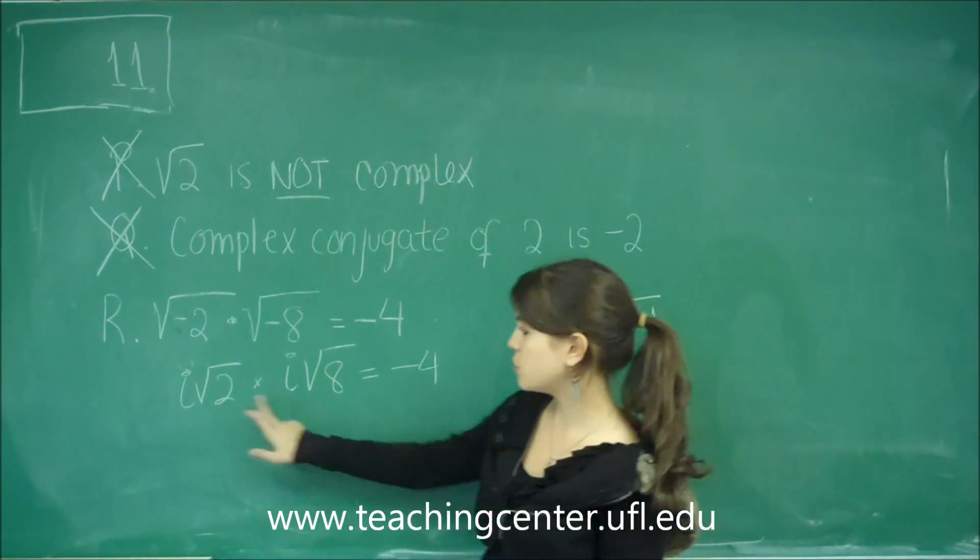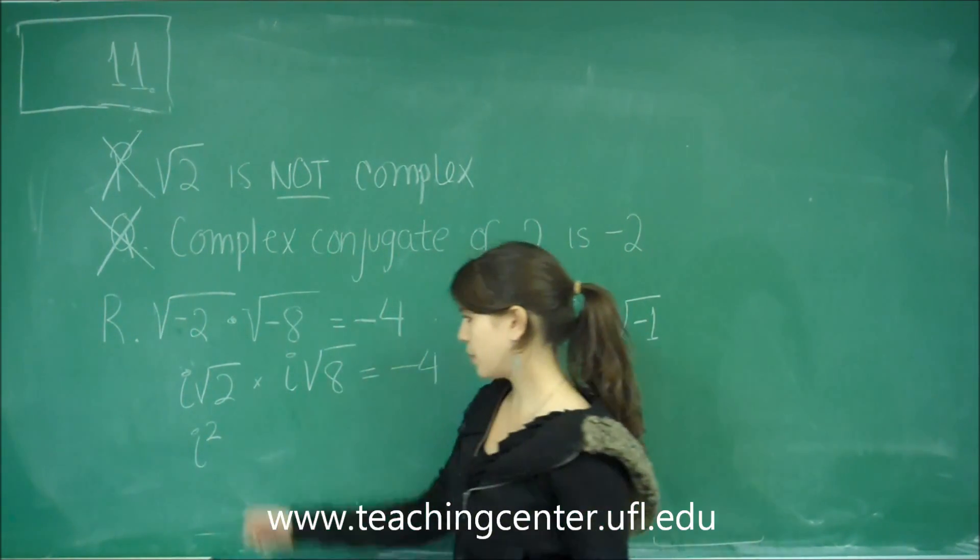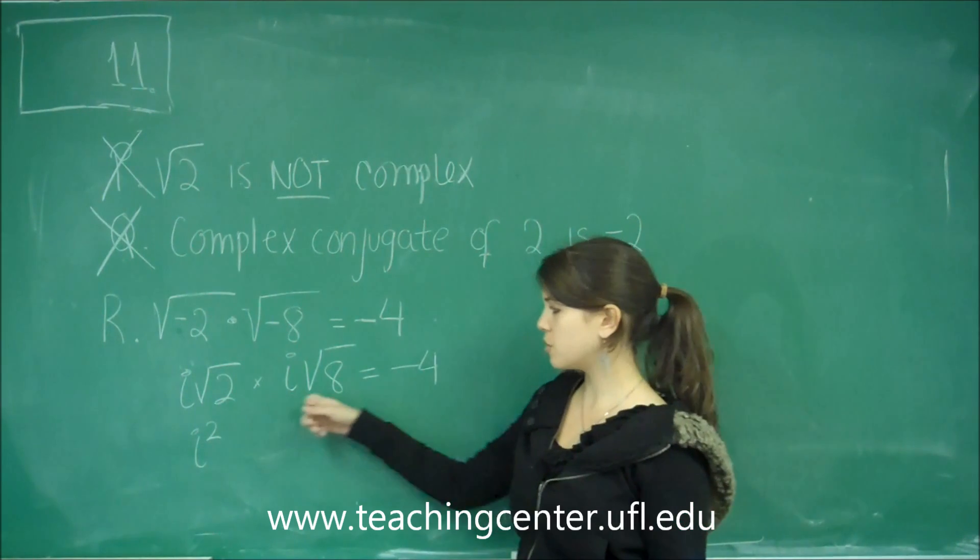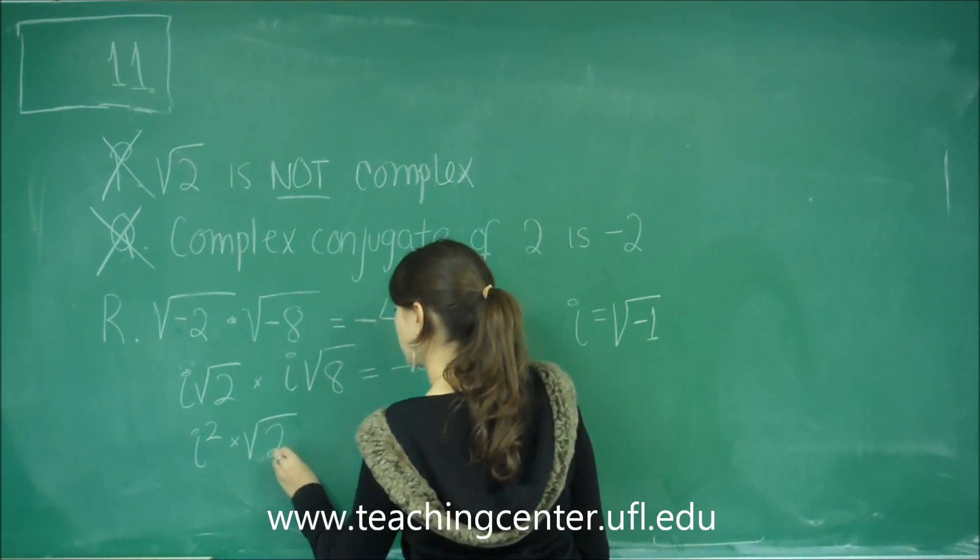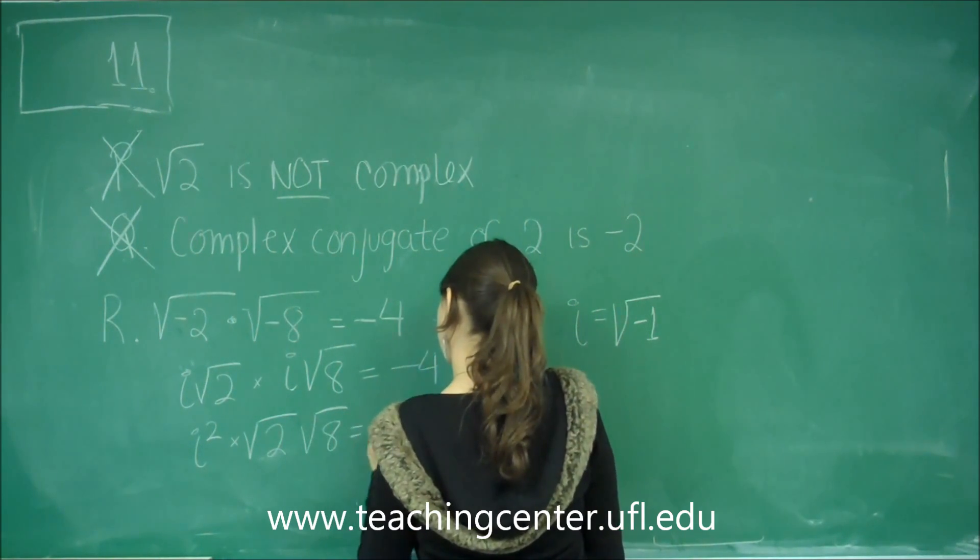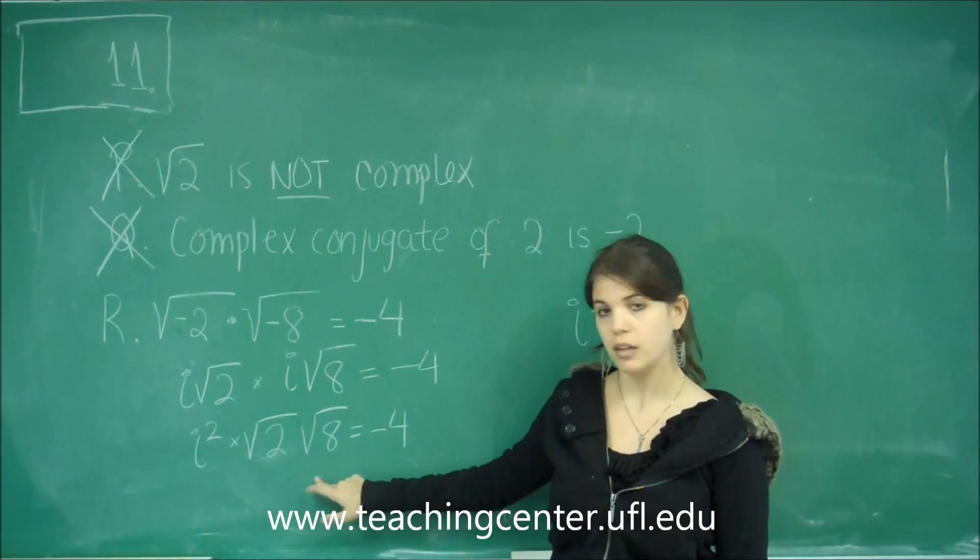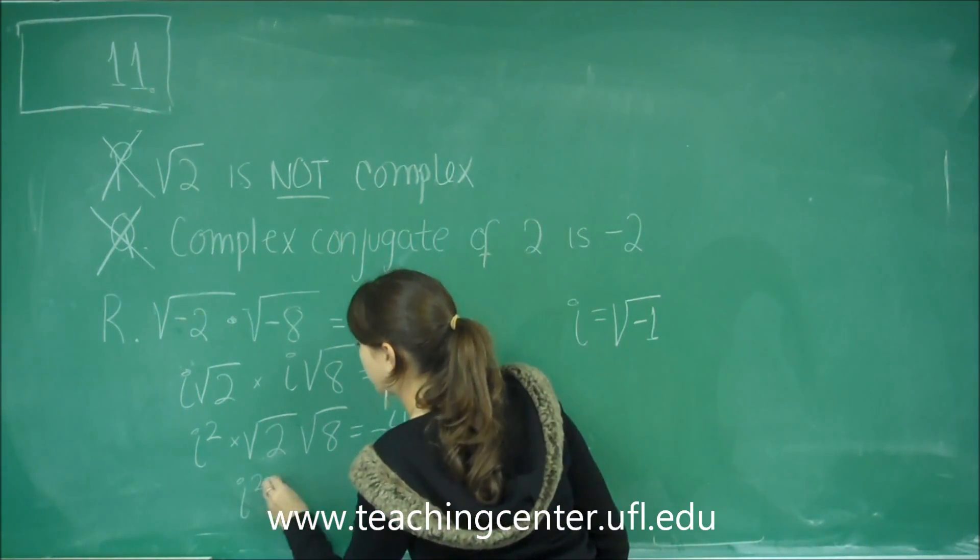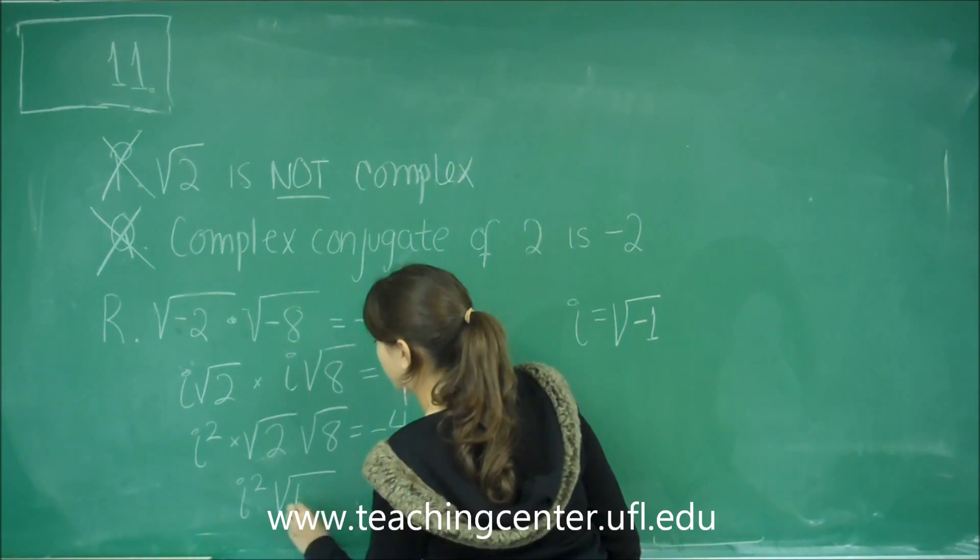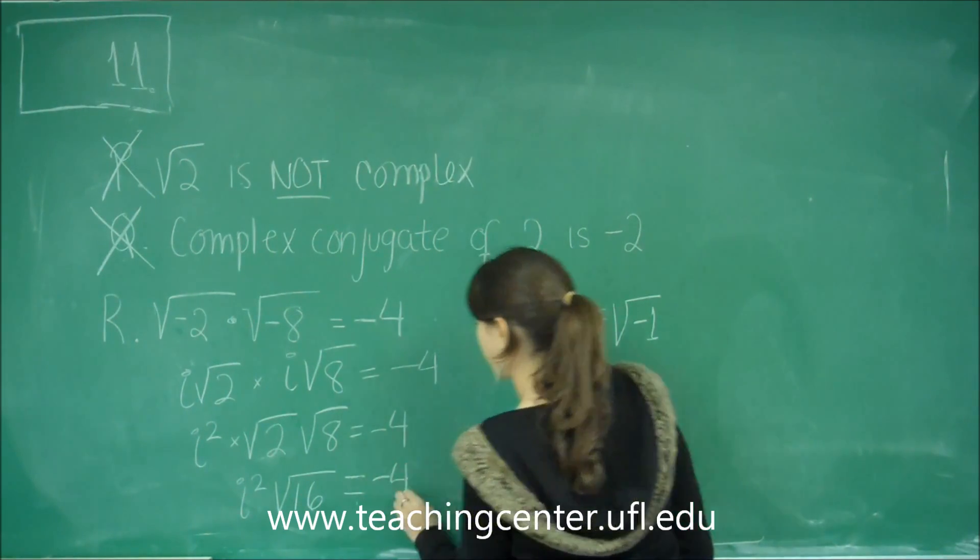Now, we're going to group together the two I's, giving me I squared, and we're going to group together the square root of 2 and the square root of 8. When you have two square roots that are being multiplied, you can put them together into one. So, this becomes I squared times square root of 16, or 2 times 8, equals negative 4.